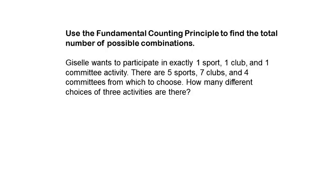What is the Fundamental Counting Principle? It states that if an event can occur in m number of ways, and a second event can occur in n number of ways, then the total number of possible ways that the events can occur together would equal the product of m and n.